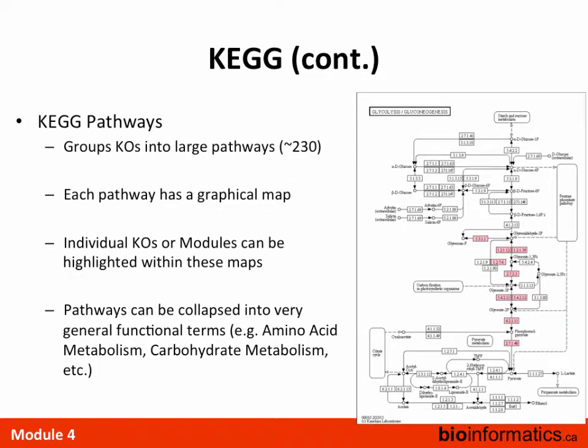KEGG pathways are even larger groupings — about 230 in the KEGG database. Each pathway has a graphical map so you get nice visual images where you can highlight particular genes. These pathways can be collapsed into more general terms like amino acid metabolism or carbohydrate metabolism. If you look at metagenomic papers, you'll sometimes see people reporting that carbohydrate metabolism increased in the gut compared to the skin — from the Human Microbiome Project paper in Nature.